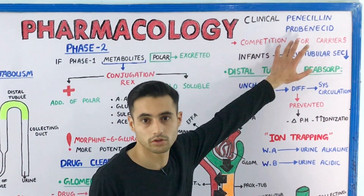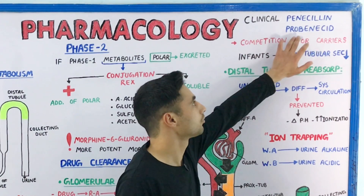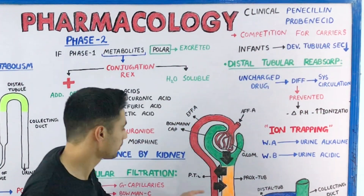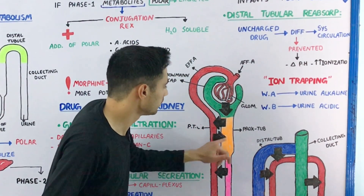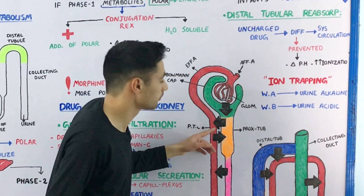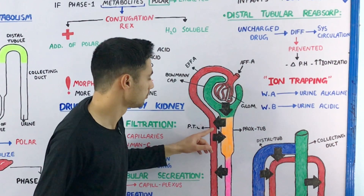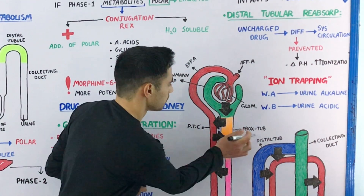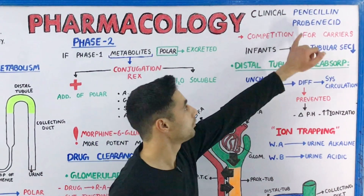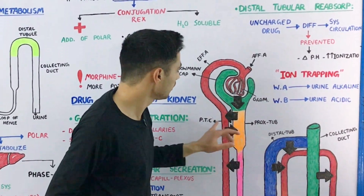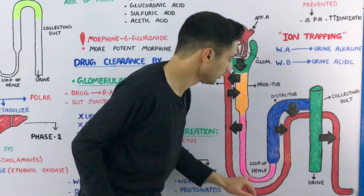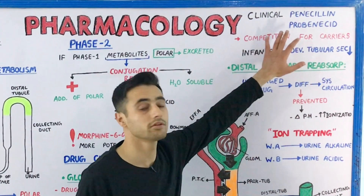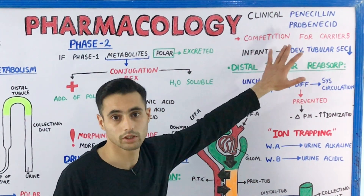An important clinical point: if you are taking two drugs simultaneously, like penicillin and probenecid, they actively compete for the carrier proteins present in the peritubular capillaries and proximal tubule. Only probenecid is excreted from the peritubular capillaries into the proximal tubule and ultimately into the urine, while penicillin is retained in the body.